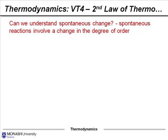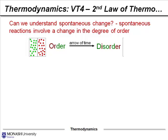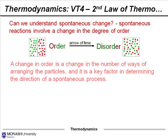Can we understand spontaneous change? Spontaneous reactions involve a change in the degree of order. If we think about this scenario: we've got a box with two different gases inside, separated by a thin wall. If we remove that thin wall, the molecules are still contained inside the box. As time progresses, we would expect them to move around, jumble, and become disordered. In other words, as time progresses, we move from a state of order to disorder. A change in the order is a change in the number of ways of arranging the particles, and it's a key factor in determining the direction of a spontaneous process.